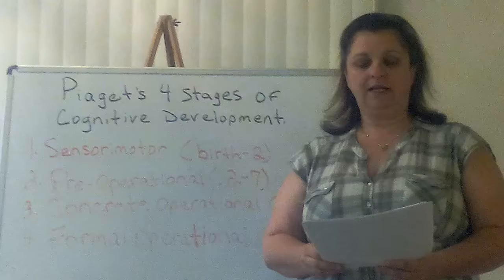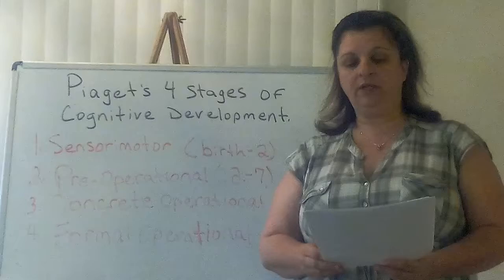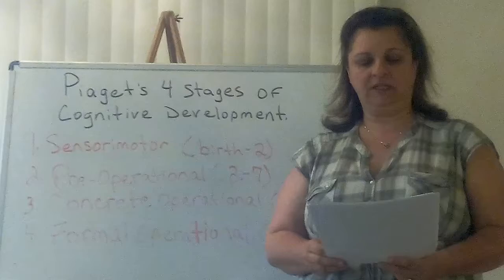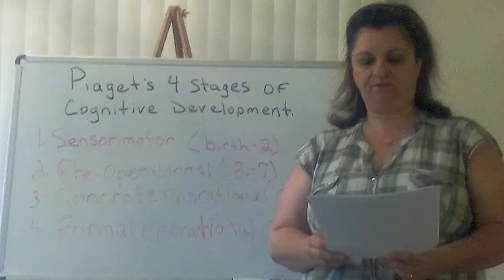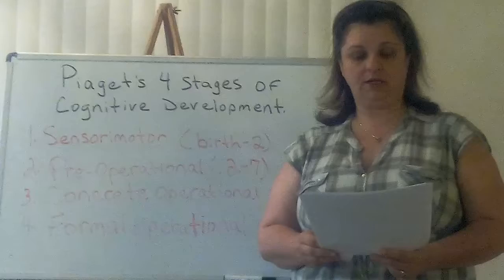Adaptation processes enable the transition from one stage to another. Equilibrium is the force which moves development along — Piaget believed that cognitive development did not progress at a steady rate but in leaps and bounds. Assimilation is using an existing schema to deal with a new object or situation. Accommodation happens when an existing schema does not work and needs to be changed to deal with a new object or situation.